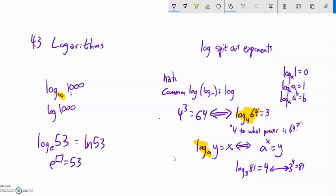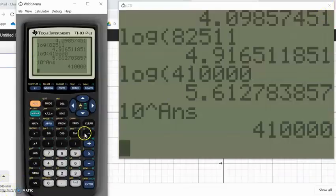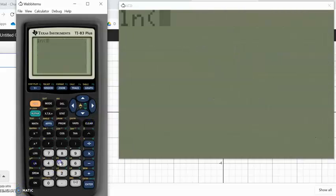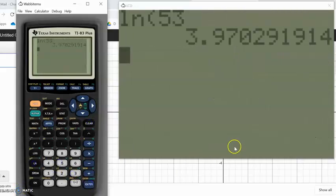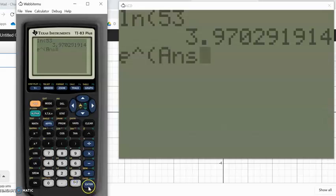So the natural log, log base e, will use the symbol ln and that's on our calculator as well. The natural log of 53 is about 3.97. Now notice what that means is if I take e to that power, see how e to the x is lined up with natural log, you can tell they undo each other. So natural e to the power of my last answer, it'll give me my 53 back.